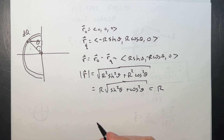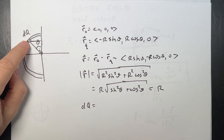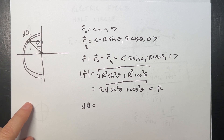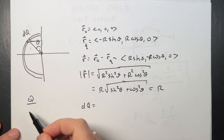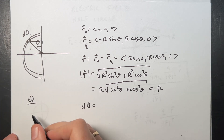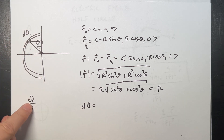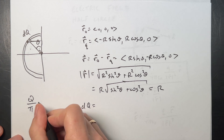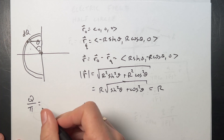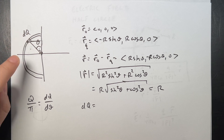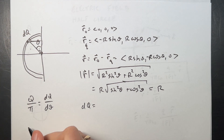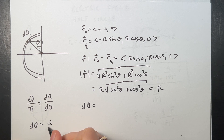Now I need an expression for DQ, the charge in a small piece. Using a ratio: total charge Q over total angle π equals DQ over its angular size dθ. So DQ = (Q/π) dθ. That's the charge in each infinitesimal piece.